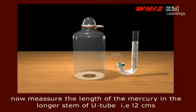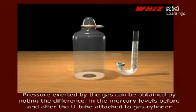Now measure the length of the mercury in the longer stem of U-tube, that is L2 cm. Pressure exerted by the gas can be obtained by noting the difference in the mercury levels before and after the U-tube is attached to gas cylinder.